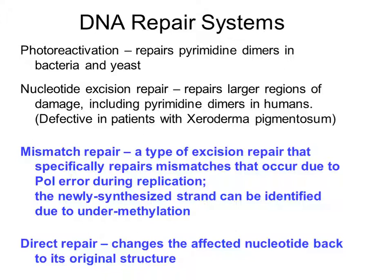Nucleotide excision repair is a repair system used to repair larger regions of damage in humans. It also includes pyrimidine dimers because we don't have photoreactivation. Nucleotide excision repair involves cutting out not just the small damaged segment of DNA, but actually a whole section of one strand, removing it, and then re-synthesizing it using the other strand as a template.